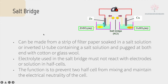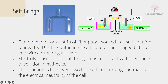A salt bridge can be made from a strip of filter paper soaked in a salt solution, or an inverted U-tube plugged at both ends with cotton or glass wool. The electrolyte used in a salt bridge must not react with the electrodes or solutions in the half cells.